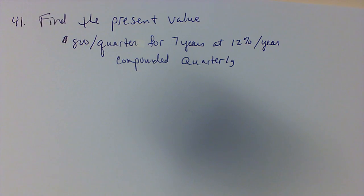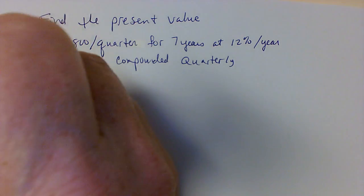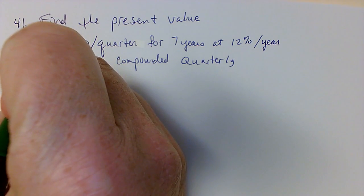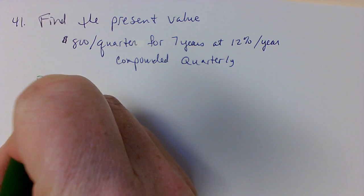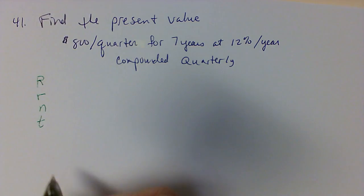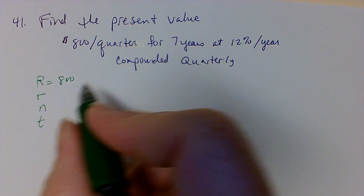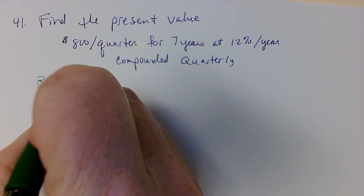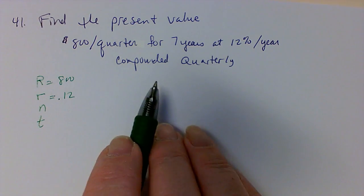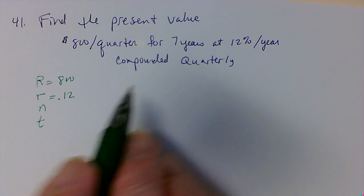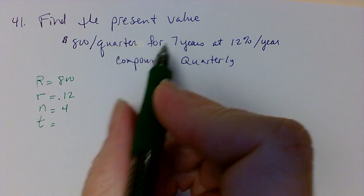So on this problem we need to figure out what all our values are. Using our present value formula we're going to have R, little r, n, and t. So our big R is our payment of eight hundred dollars per quarter. The rate is twelve percent, written as a decimal 0.12. The n is how many times per year, quarterly is four times a year, and the number of years is seven.